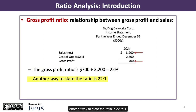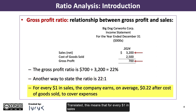Another way to state the ratio is 22 to 1. Translated, this means that for every $1 in sales, the company earns, on average, $0.22 after cost of goods sold, to cover expenses.